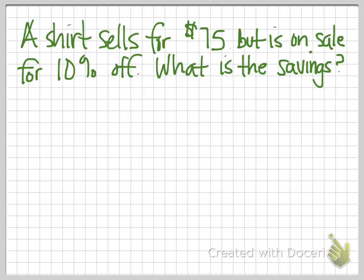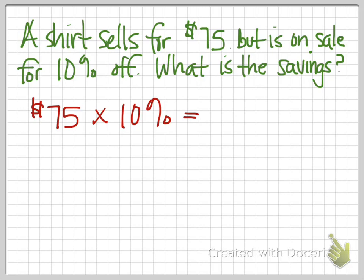Here's another percentage example problem. And again, we need to pay attention to what we are being asked. A shirt sells for $75, but it is on sale for 10% off. What is the savings? Well, if the shirt regularly sold for $75 but we're going to get it for 10% off, if we do that math, then we have a result of $7.50. Now that is the amount that we saved, so we can stop right here — that's the answer to the question.